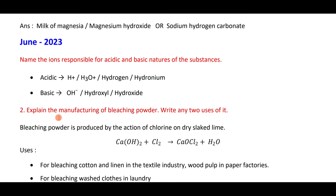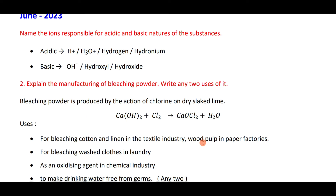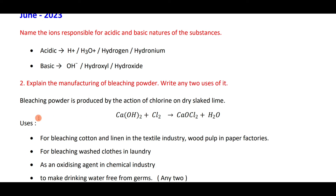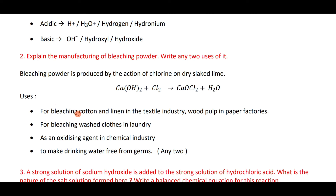Manufacture of bleaching powder: it is produced by the action of chlorine on dry slaked lime — Ca(OH)₂ plus Cl₂ gives CaOCl₂ plus H₂O. Uses: bleaching cotton and linen in the textile industry, wood pulp in paper industry, washing clothes in laundry, as an oxidizing agent, and to make drinking water free from germs.